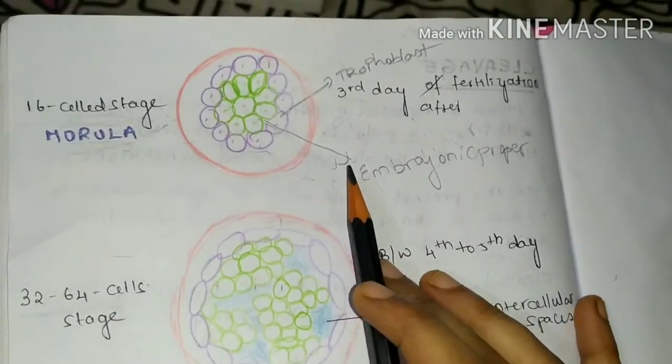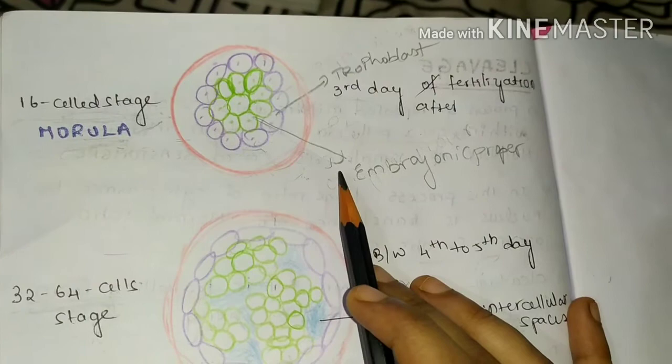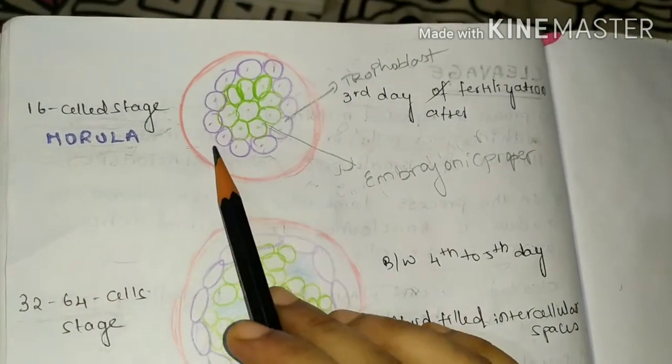Up to this stage, the nutrition for these stages is coming from the breakdown products of tubal secretion and the food stored in their cytoplasm.